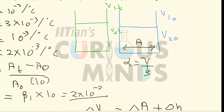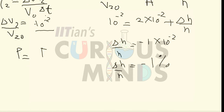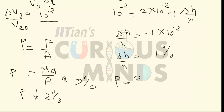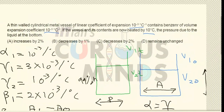The benzene height has decreased by 1%, so if the original height was H, the new height is 99% of H. Now, pressure = Mg/A. The mass M remains the same, but since the area has increased by 2%, the pressure has decreased by 2%. Therefore, the pressure at the bottom decreases by 2%, which corresponds to option C.